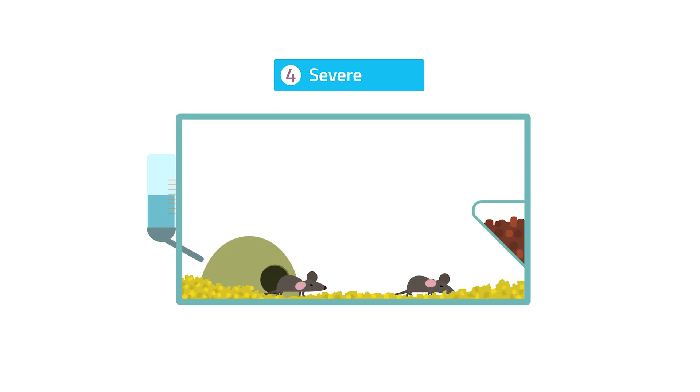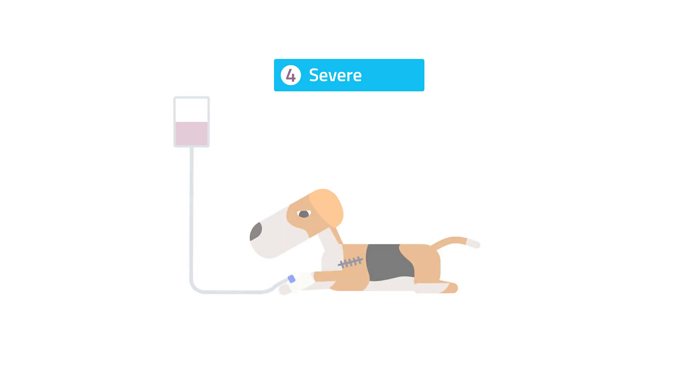The highest category is severe discomfort, a high degree of pain, suffering, or anxiety like heart failure or stroke. Moderate discomfort that lasts for a longer time or is repeated can also count as severe.